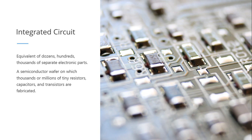An integrated circuit is defined as a semiconductor wafer — so its base is still a semiconductor — and on the semiconductor wafer we can actually include millions, hundreds, or thousands of tiny resistors, capacitors, and of course transistors. One IC could be an equivalent of dozens, hundreds, and even thousands of separate electronic parts.